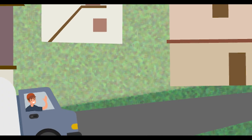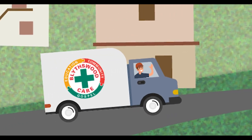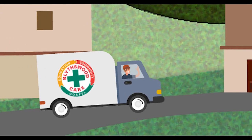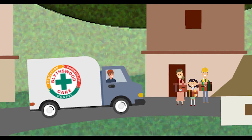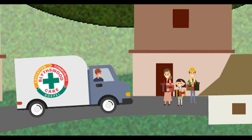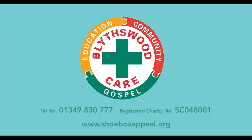Every year, Blytheswood Care sends shoeboxes to many countries across Eastern Europe, where there are people who don't have as much as we do. We do this to let people like Petra know that there are people out there who care for them, even in the darkest times. And there is so much hope if we all work together. You can help us by filling a shoebox this year and handing it in to your local collection point.